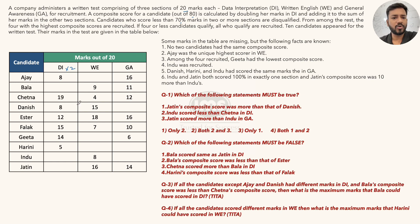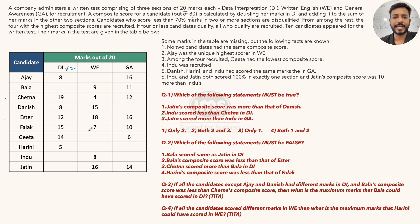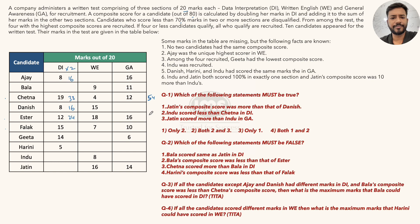For candidates where all values are known — Chetna, Esther, and Falak — let's calculate composite scores. I'll double the DI scores to make addition easier. Chetna: DI double = 16, total = 16 + 19 + 19 = 54. Danish: DI double = 16, GA = 20, total = 16 + 15 + 20 = 51 (partial). Esther: DI double = 30, total = 30 + 10 + 7 = 47. Falak: DI double = 28, partial. That's the most we can do before reading the statements.